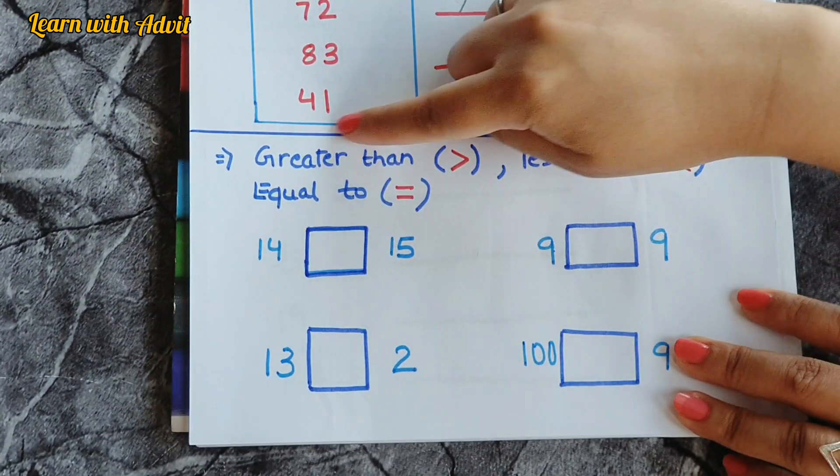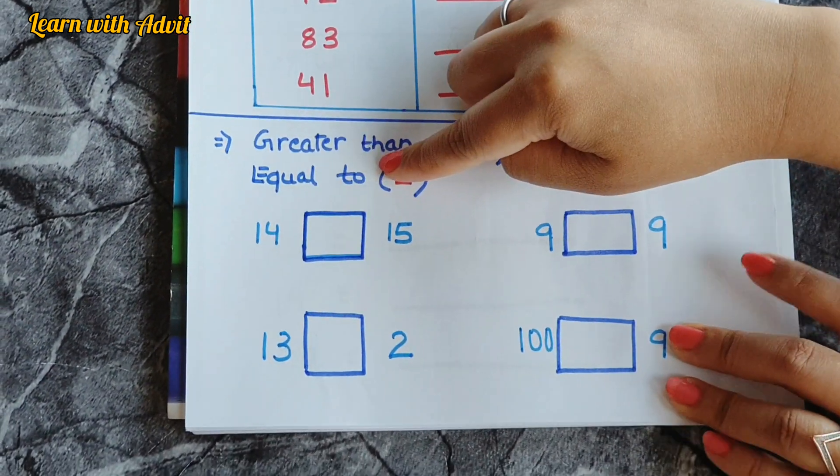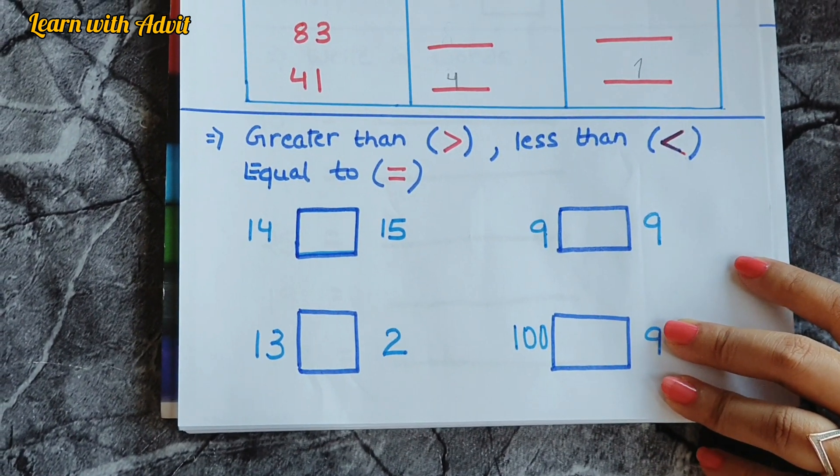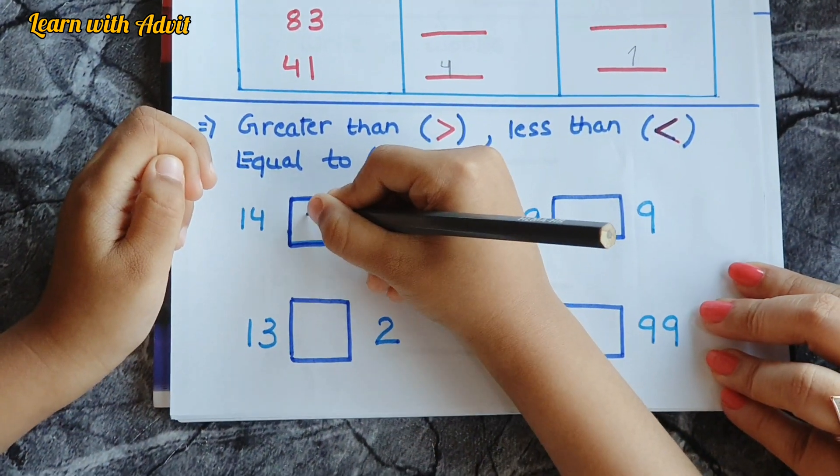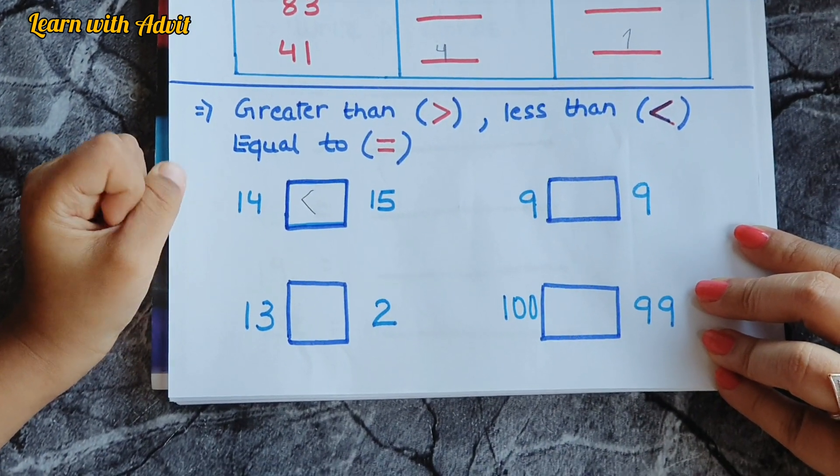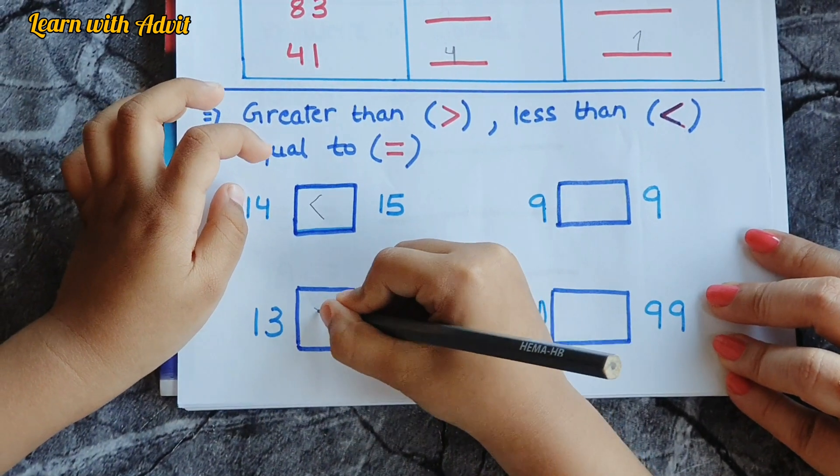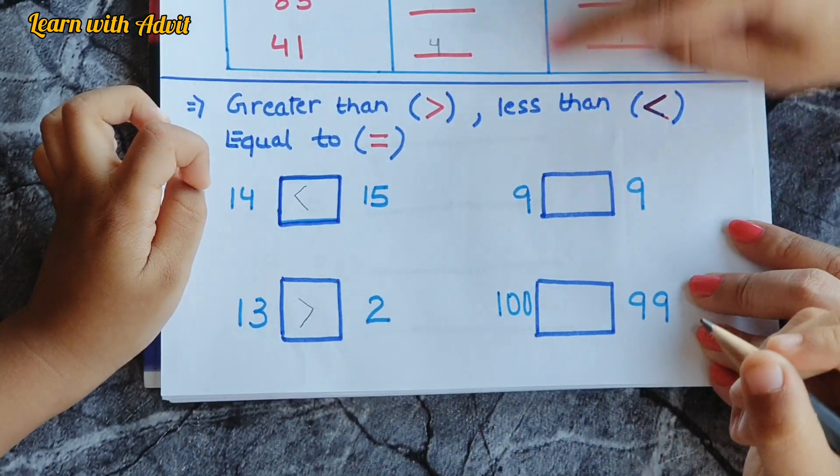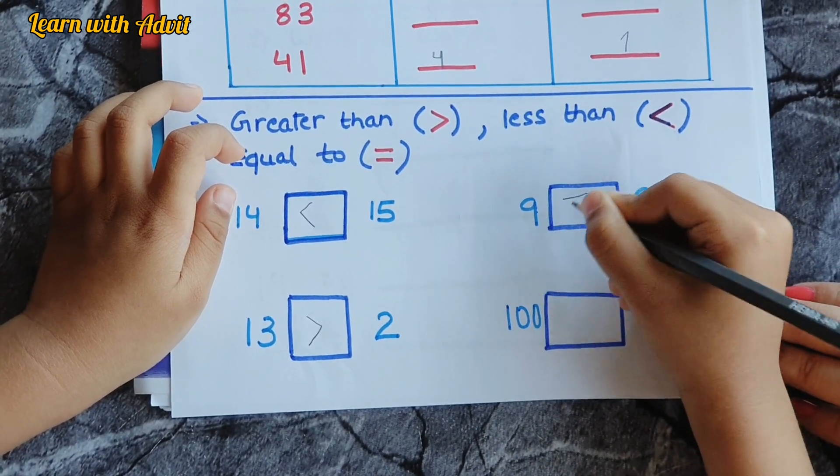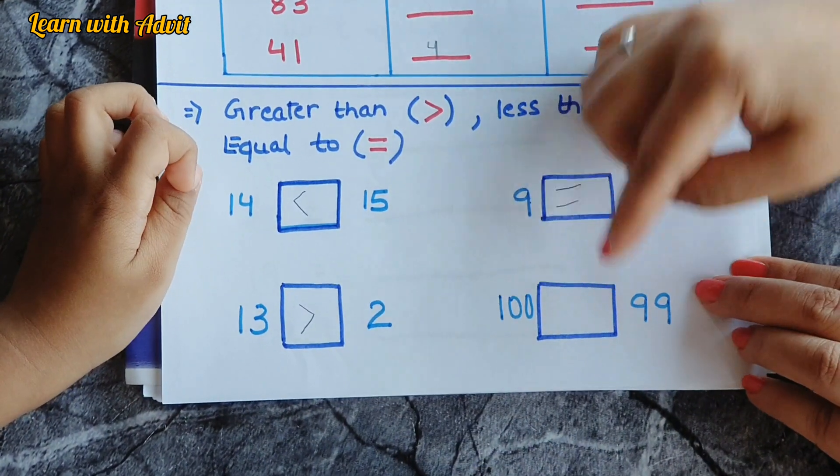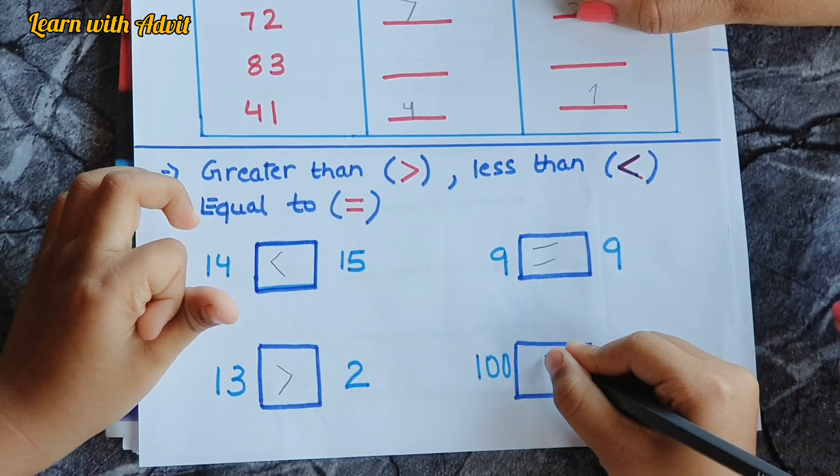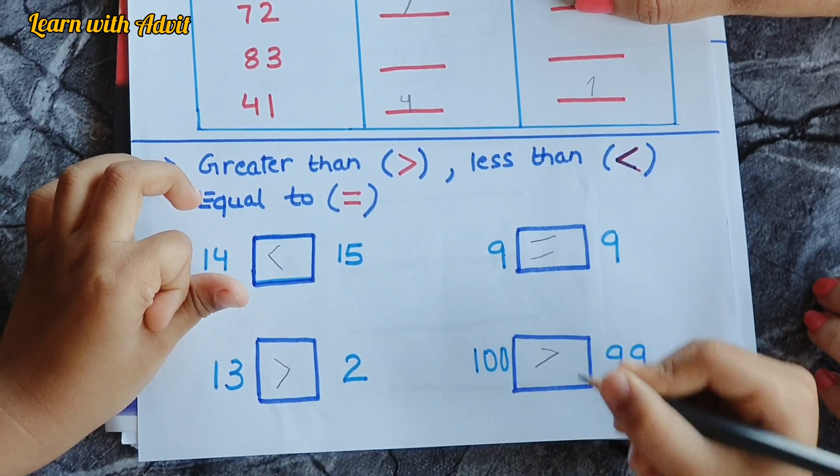So this here, greater than, less than, and equal to. So, fourteen is less than fifteen. Very good. Thirteen is greater than two. Nine is equal to nine because they are the same. And hundred is greater than ninety-nine. Very good.